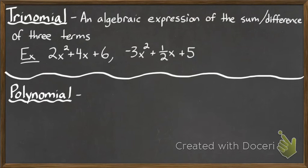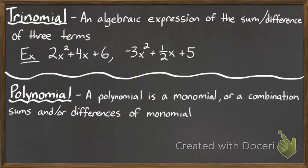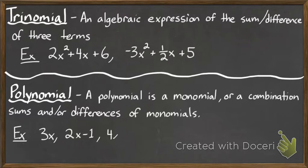All of these fall into the branch of polynomials. A polynomial is just a monomial or a combination of sums or differences of monomials put together — so you could have one term, two terms, three terms, four terms — it doesn't matter, it's called a polynomial. For example, 3x is a monomial but falls into the category of polynomials, same with 2x minus 1, and 4x squared plus y plus 2.